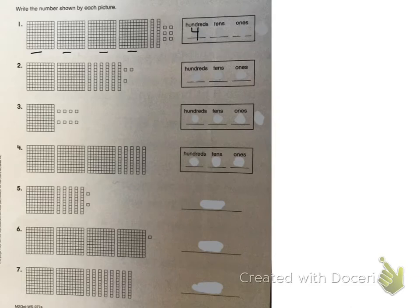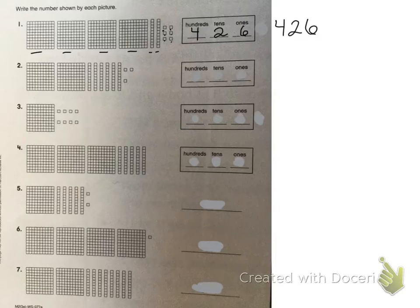Then I have one, two tens, so I'm going to put two in the tens place. And then I have one, two, three, four, five, six ones, so I'm going to put a six in the ones place. So my whole number is four hundred twenty-six.